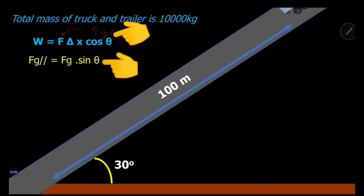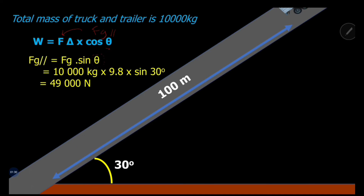There are going to be two different theta values in the formulas and we don't want to confuse ourselves. The theta in the sine term relates to the angle of inclination, while the cosθ in the work formula relates to the direction of motion — these two thetas are different. So it is important to calculate FG parallel separately and then substitute it into the formula.